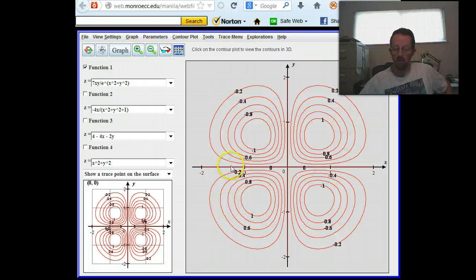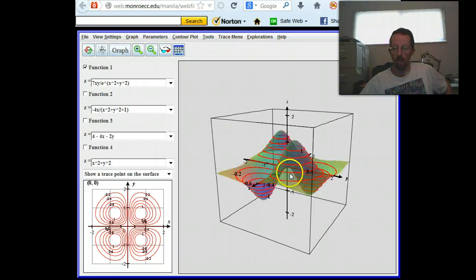So it's got labels on these contours. Notice it says click on the contour plot to view the contours in 3D. That's really useful.